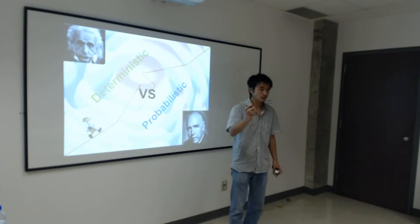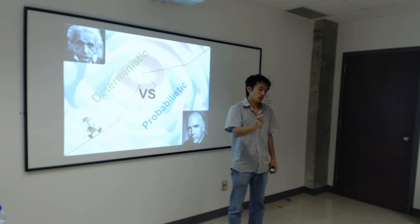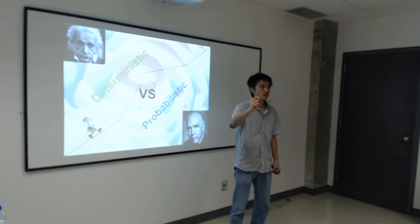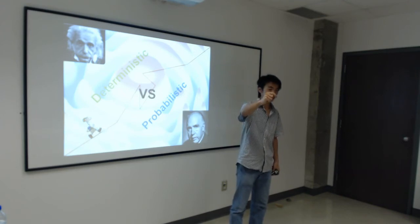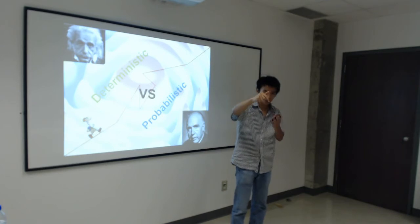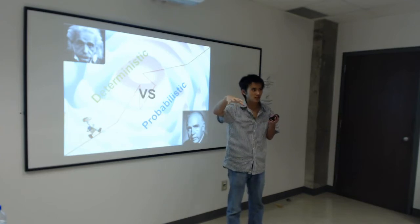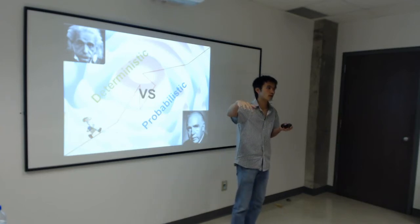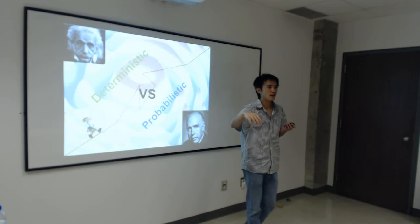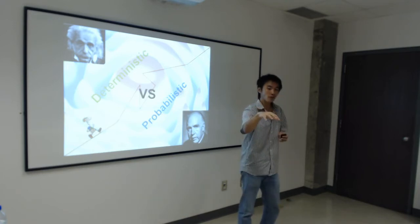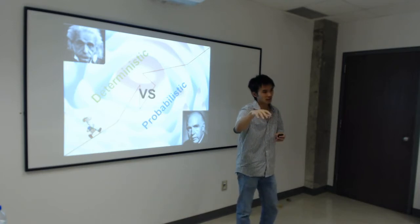So quickly, quantum mechanics is the idea that if you take a fundamental object of nature, like an electron, it looks like a point, but when you zoom in, it no longer looks like a point. It feels in space, kind of like a wave. So quantum mechanics says that the fundamental objects of nature are actually kind of like waves.